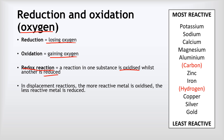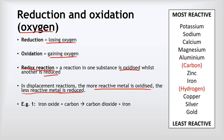Displacement reactions are examples of redox reactions. In a displacement reaction, the more reactive metal gets oxidized — it starts out as an element and gains oxygen — whereas the less reactive metal gets reduced, starting out in a compound and losing oxygen. For example, iron oxide reacting with carbon: carbon is higher on the reactivity series, so it is more reactive than iron. The carbon gets oxidized, gaining oxygen, whereas the iron gets reduced, losing oxygen.